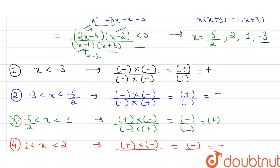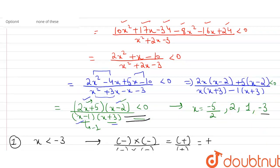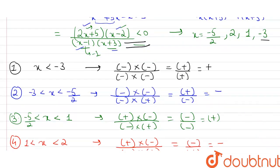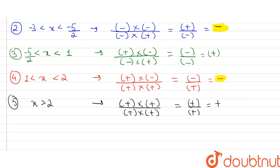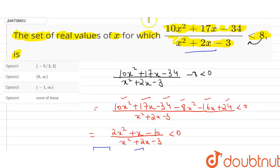According to the inequality, we need the expression to be less than 0, so we take only the cases that gave negative values — cases 2 and 4. Therefore, the set of values of x is (−3, −5/2) ∪ (1, 2). Matching with the options, since no listed option matches directly, the answer is option 4: none of these.